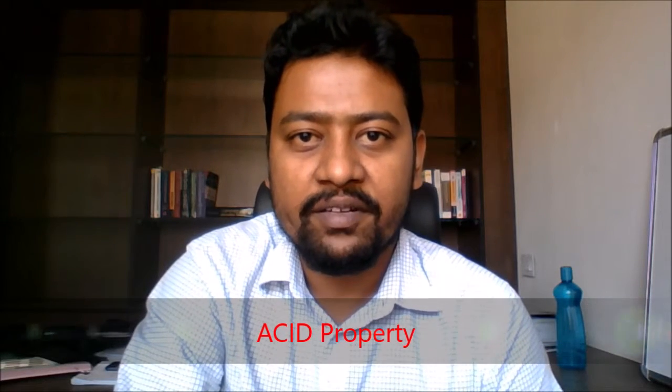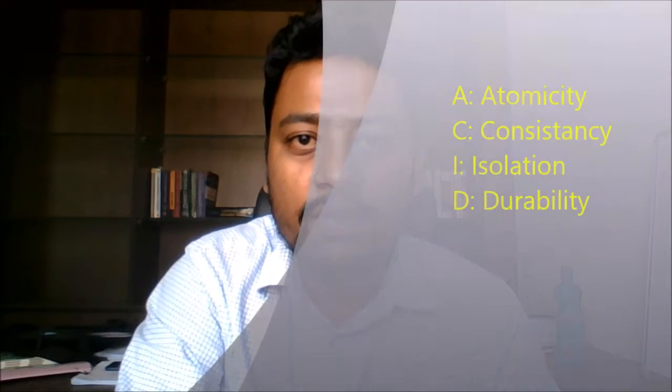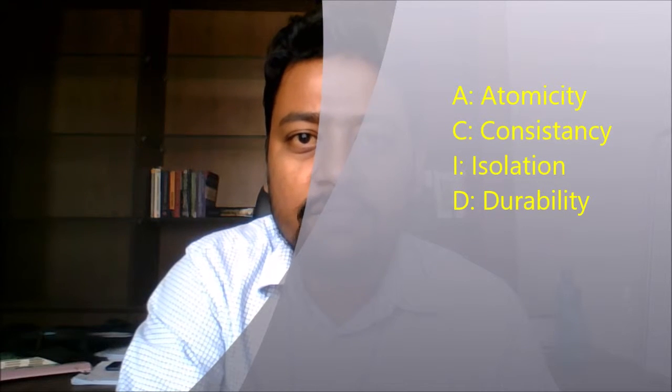Hello, welcome to Agupop. In this video I will discuss the ACID properties of DBMS. So what is ACID property? ACID property is four properties of DBMS. These four properties are: A for atomicity, C for consistency, I for isolation, and D for durability.